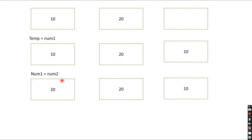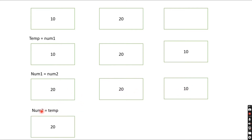At this point we have already swapped the value of num1 to 20 — it was 10 before. Now we just need to update num2. The last step is to assign num2 the value from the temporary variable, which is 10, because that 10 value is stored inside temp. So num1 will be 20 and num2 will be updated to 10.